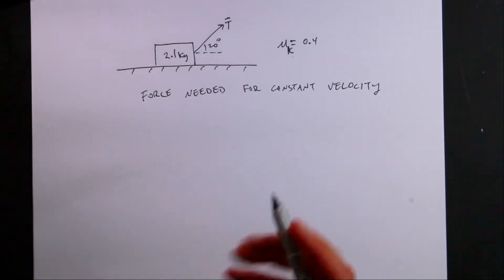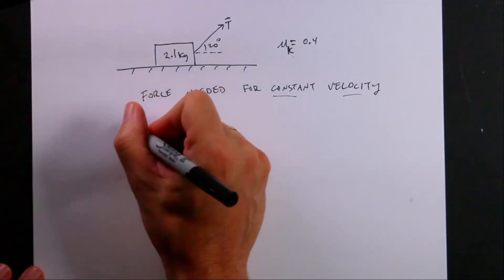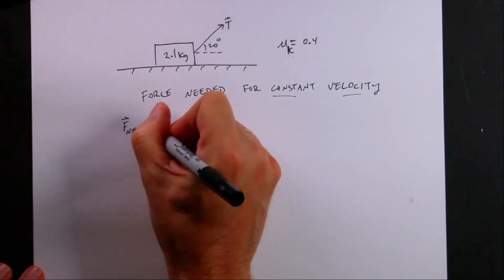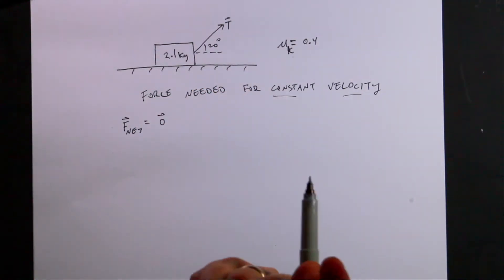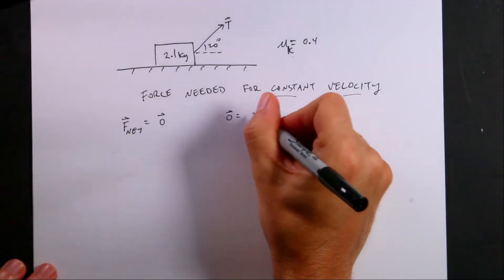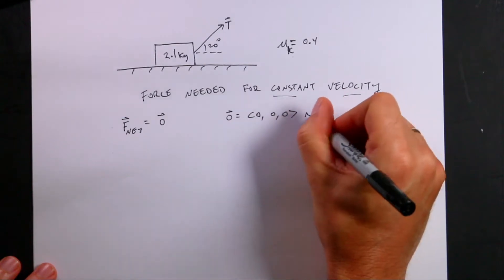Since the key word here is constant velocity, if that's true then I know that I could write this: F net equals zero. If it's moving at a constant velocity, the acceleration is zero, so the total forces have to add up to the zero vector. Remember, the zero vector looks like this. It has a zero x component, a zero y component, and a zero z component in Newtons.